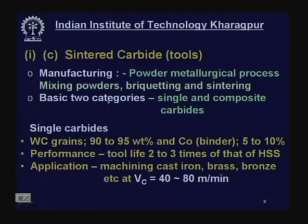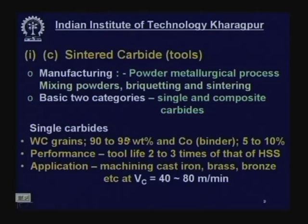There are basically two categories of powder-metallurgy carbide tools: single carbide and composite (double or multiple) carbide. Single carbide contains only tungsten carbide and cobalt. Tungsten carbide grains of about 1–20 microns are mixed with cobalt powder and sintered — cobalt acts as a binder providing strength and toughness, while tungsten carbide grains give wear resistance and heat resistance. Cobalt content is 5–10%, tungsten carbide 90–95%.